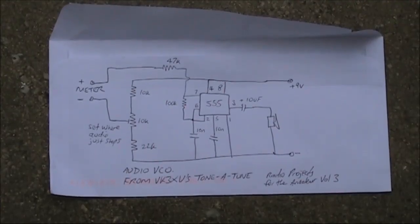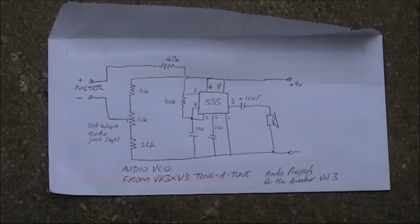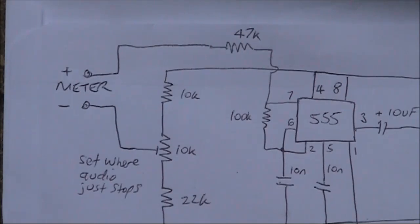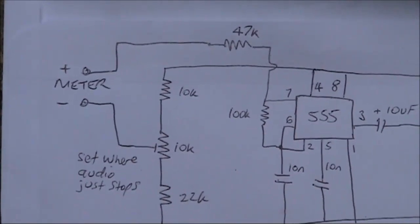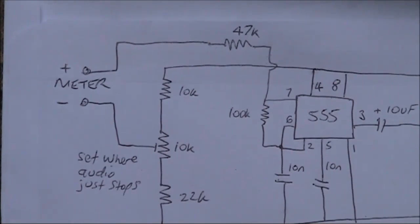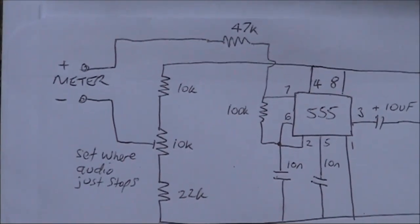If you want to build it, here's the circuit. It's so simple you can draw it on the back of an envelope. The negative connection of the meter goes to the wiper of the potentiometer. And the positive connection of the meter goes to the 555 via the 47k resistor.